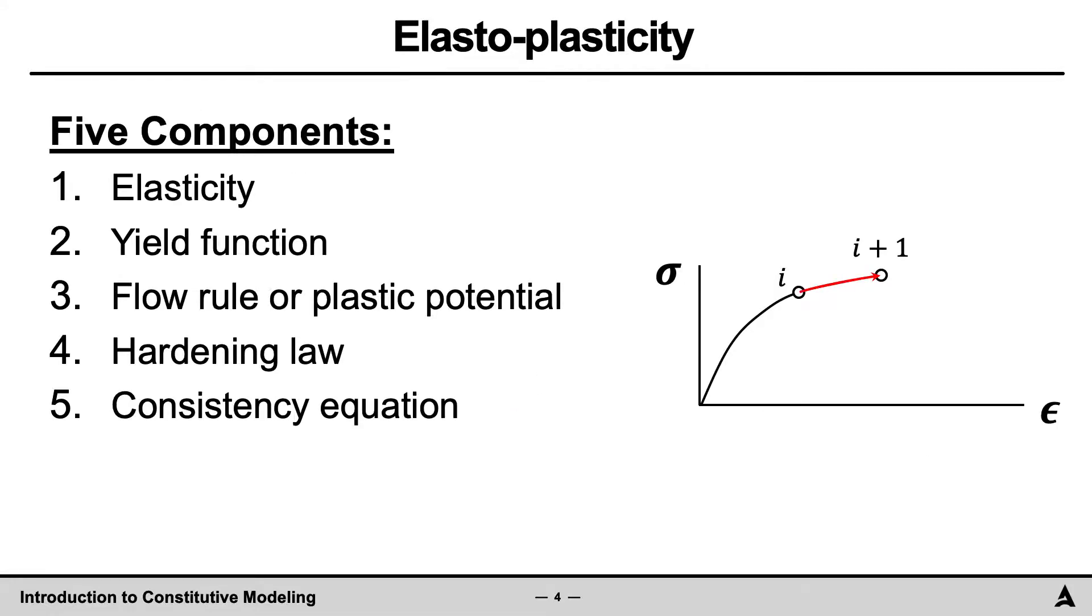An elastic-plastic model is defined based on essentially five items. First, elasticity. Second, the yield function. Third, the flow rule and/or plastic potential. Fourth, the hardening law. And fifth, the consistency equation.